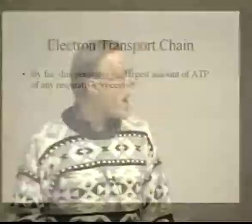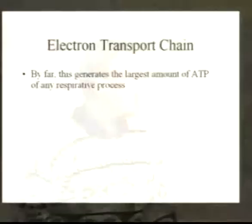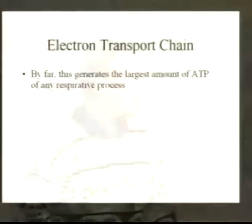By far, electron transport generates more ATP than any of the other processes. Glycolysis generates two net ATPs; the Krebs cycle generates two ATPs; electron transport generates 34 ATPs. So this is a huge energy payout for the cell.